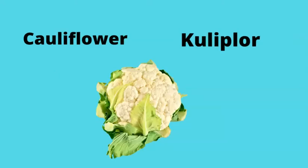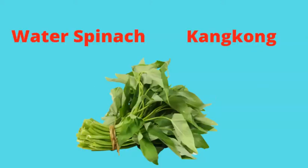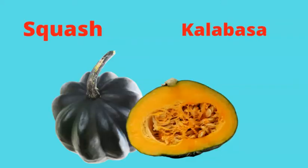Cauliflower — kuliplor. Water spinach — kangkong. Squash or pumpkin — kalabasa.